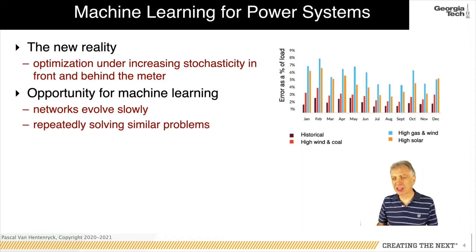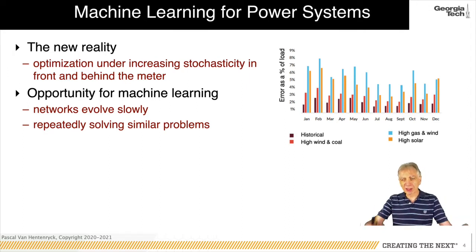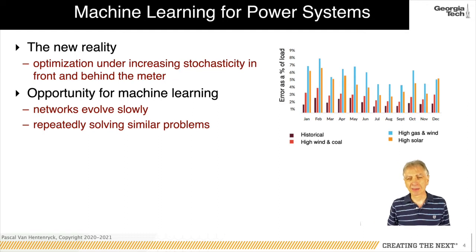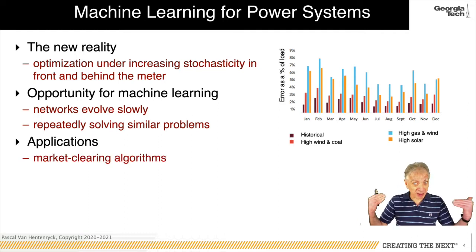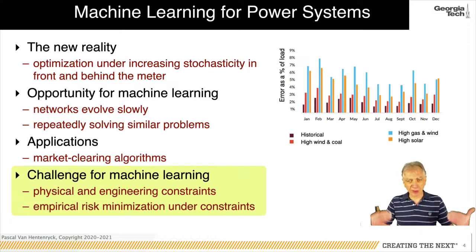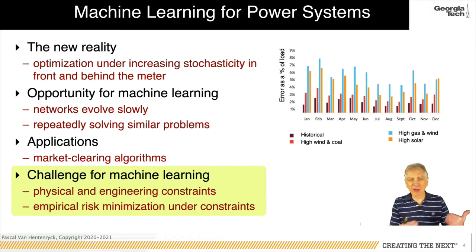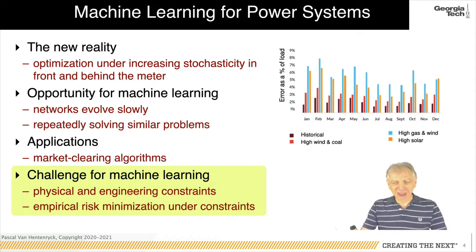Machine learning is particularly interesting in this context because these physical networks evolve very slowly. Operating a power grid essentially means solving the same problems every day on very similar instances — an ideal case for machine learning. This applies to market clearing algorithms used every day: unit commitment, look-ahead commitment, and optimal power flows. The challenge is that power systems must operate under very strong physical and engineering constraints, raising unique challenges. What we need is empirical risk minimization under these physical and engineering constraints.